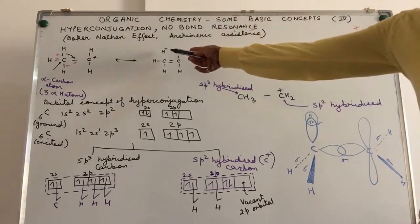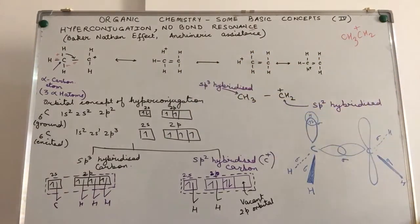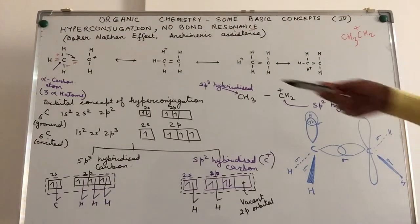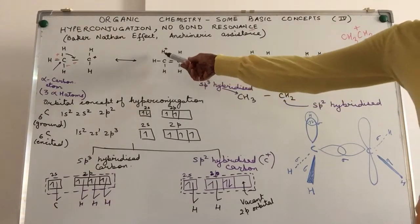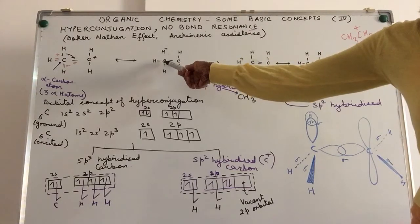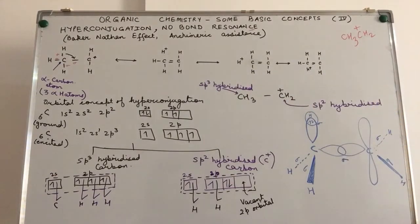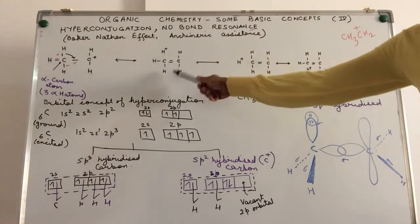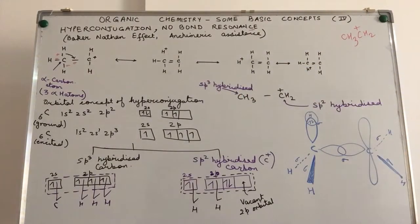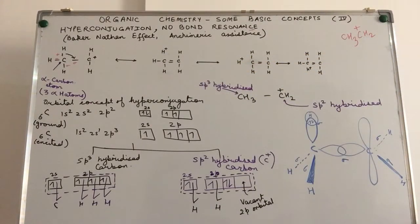So what will happen to the hydrogen over here? The hydrogen gets a positive charge. The carbon-carbon can turn into a double bond by withdrawing sigma electrons from the first, second, or third C-H bond. In other words, there are three possible structures wherein the three hydrogens are acquiring a positive charge turn by turn. This is somewhat like resonance, but since there is no bond left between the carbon and the hydrogen, it is called no bond resonance.